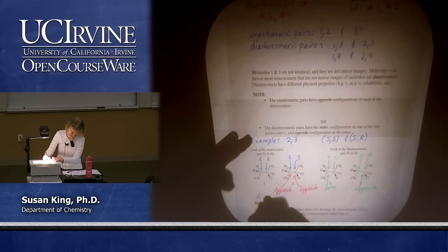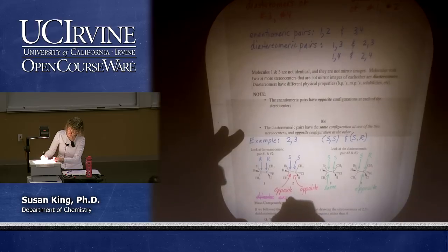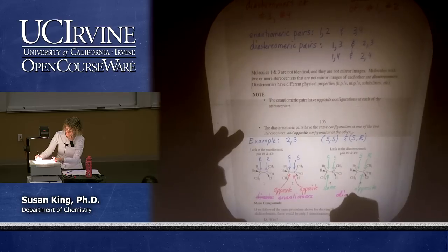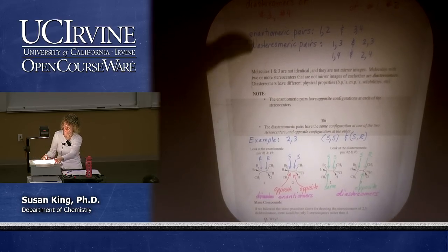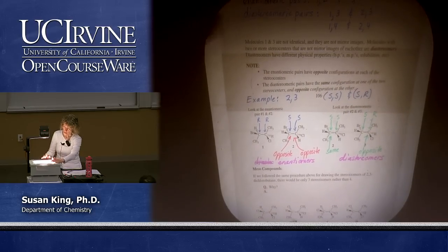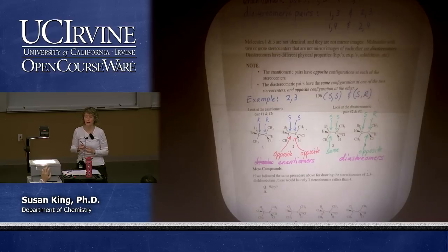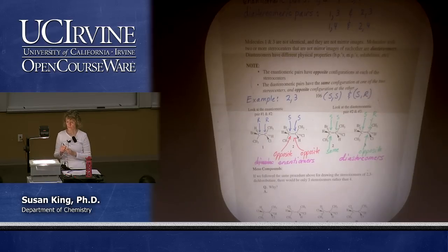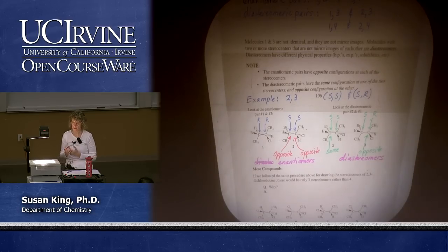Can we use this method to determine if two compounds are enantiomers rather than seeing if they are mirror images that are not superimposable? Yes, you can use this method to see if things are enantiomers. It's a lot easier than drawing a mirror image, so this works really well for that.